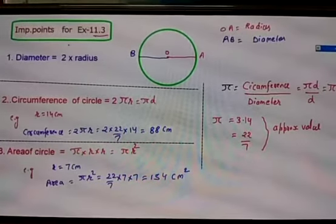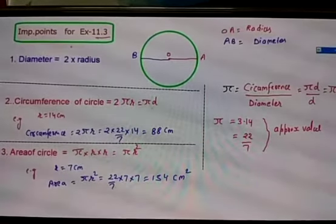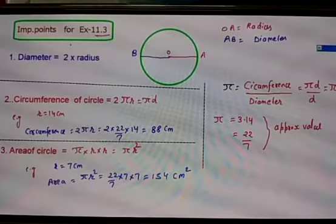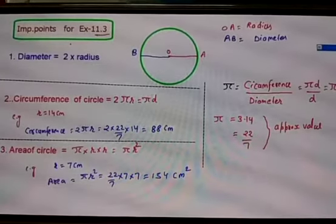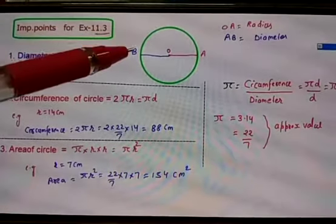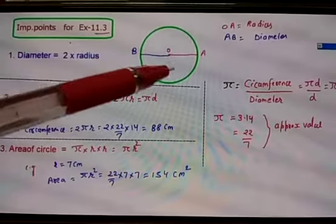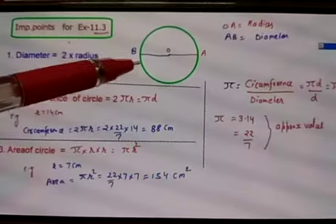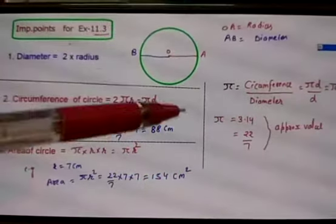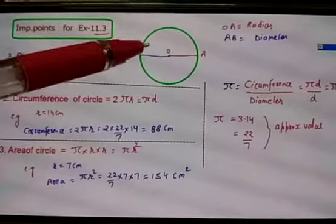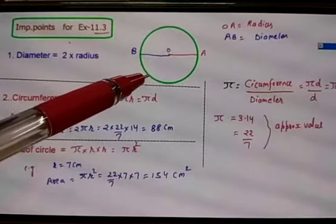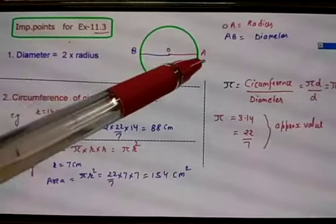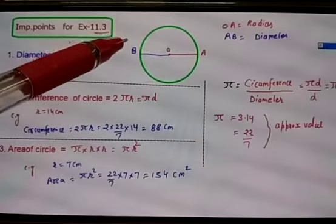Now in this topic we are going to learn the area of the circle and the circumference. What is the meaning of circumference? The curve line completing the circle is known as circumference. The outline of a circle is known as a circumference.